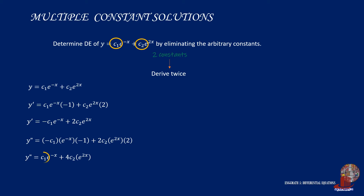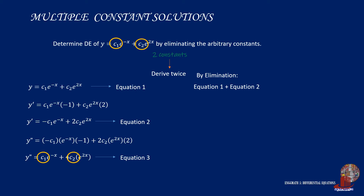Upon reaching the second order derivative, we still find the arbitrary constants present. So we resort to the method of elimination, whereby we denote the original equation as equation 1 and each derived function as equations 2 and 3. If we add equation 1 and equation 2, the first terms will cancel out, leaving y plus y' is equal to 3c2 times e raised to 2x.